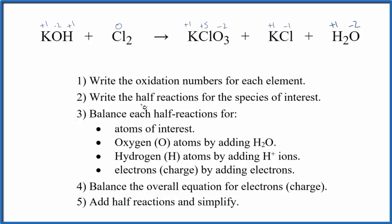Next, we can write the half reactions for the species of interest. Those are the ones whose oxidation numbers have changed. But if you note, the only thing that's changed is chlorine. It goes from 0 to plus 5 here, and it goes from 0 to negative 1 here.